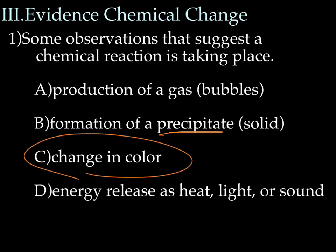A change in color is an important piece of evidence, but it can be a point of confusion. If I mix a blue solution with a clear solution and get a light blue solution, that's not really a change of color. When we talk about a change of color as evidence for a chemical reaction, we mean a change you wouldn't predict — like if you mix a blue solution with a clear solution and it turns out orange, that's evidence for a chemical change. Also, the release of energy in the form of heat, light, or sound.